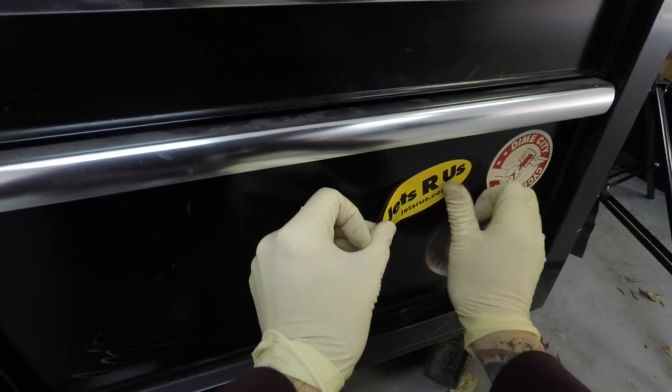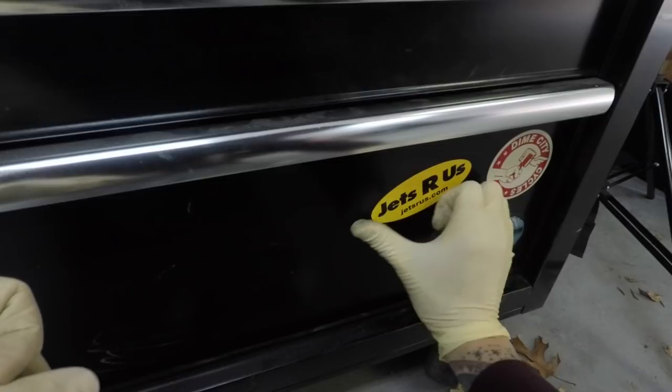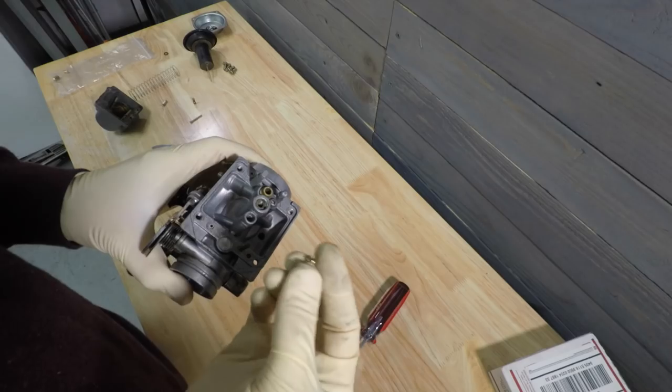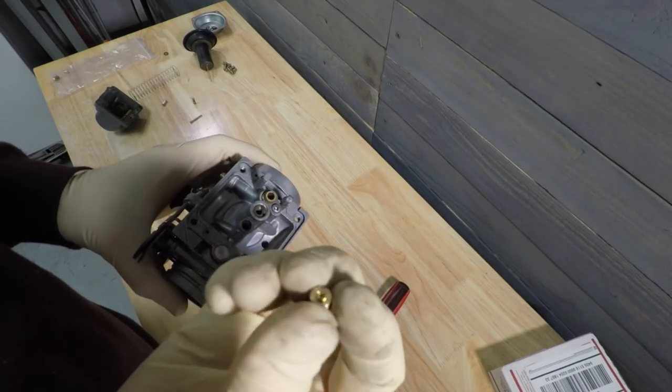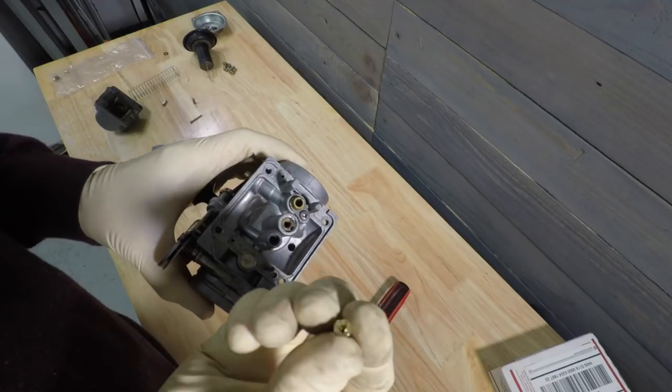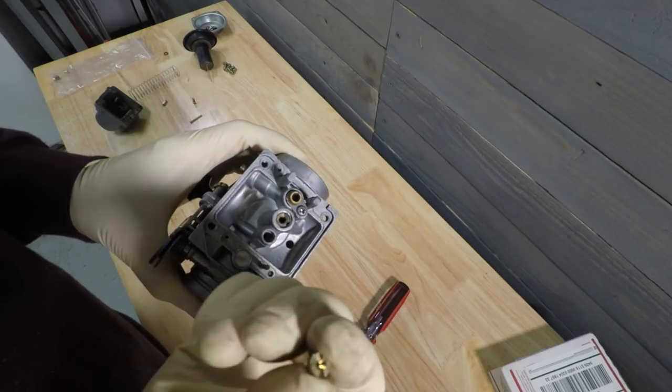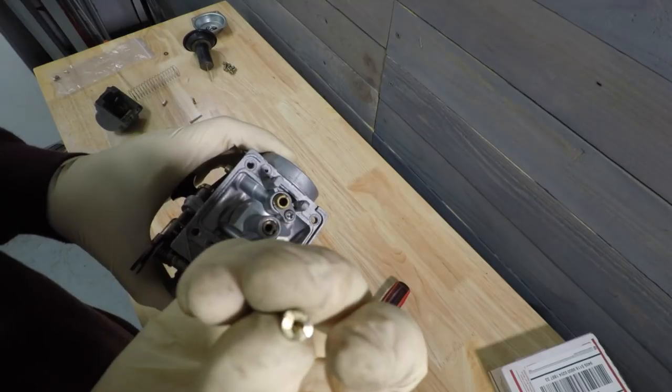Bam. Sticker. Okay so here's our new shiny jet. The original jet is a size 130 so we're going to go up to start with a 132.5.